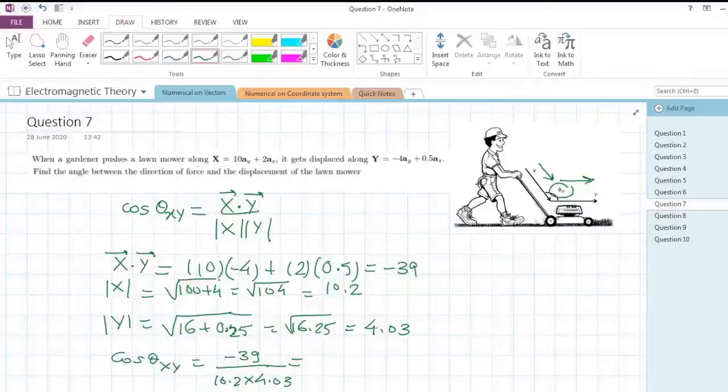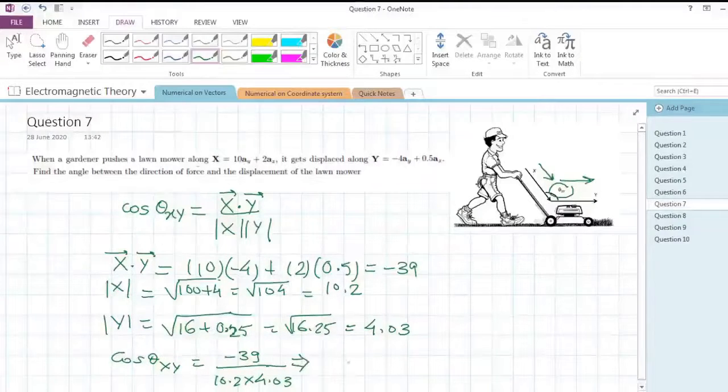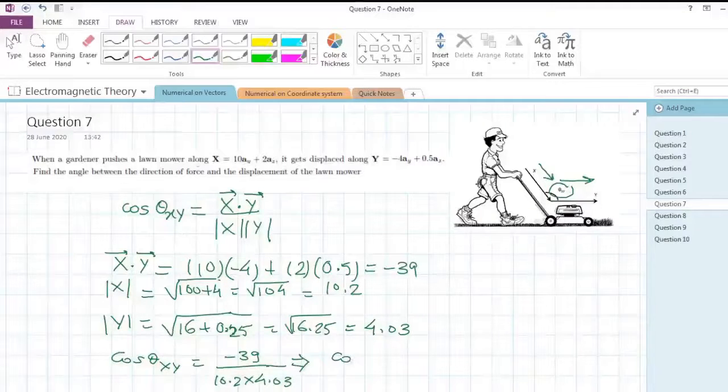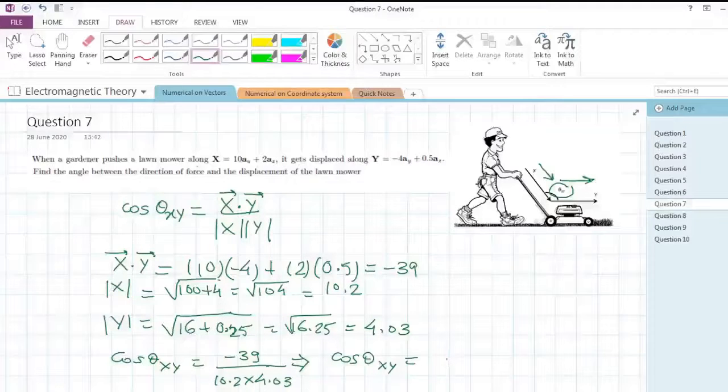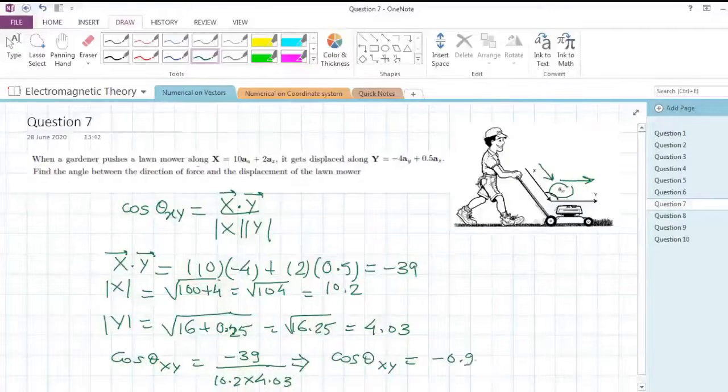Whenever it's written that we have to find only an acute angle, then only we'll skip this minus sign. But right now the problem shows that the angle is not acute, it is obtuse. So we'll not skip this minus sign because it will help us find the proper value of the angle. We'll find cos theta_xy as -0.95.